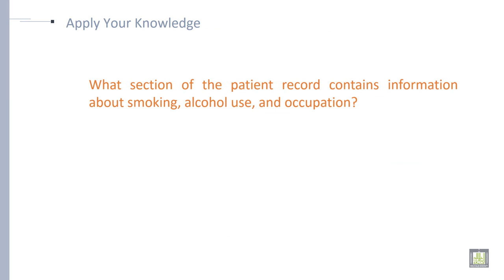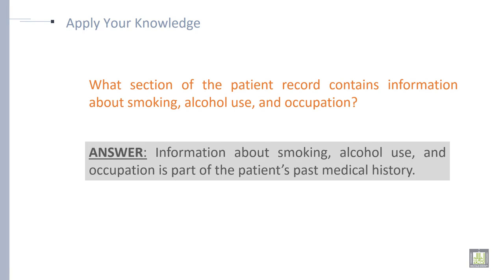What section of the patient record contains information about smoking, alcohol use, and occupation? The answer is: information about smoking, alcohol use, and occupation is part of the patient's past medical history.